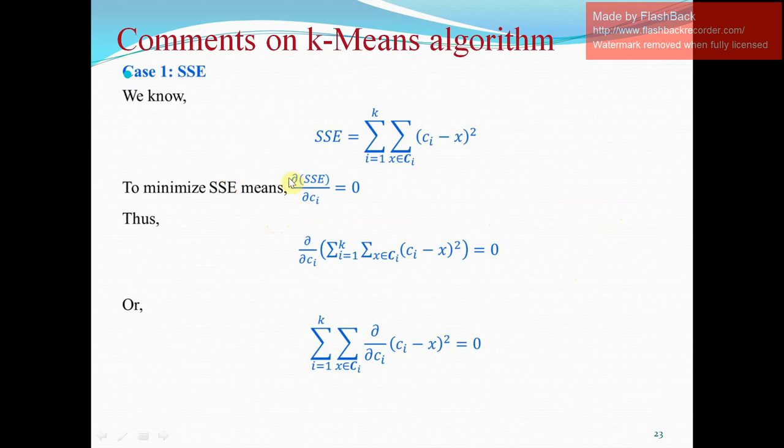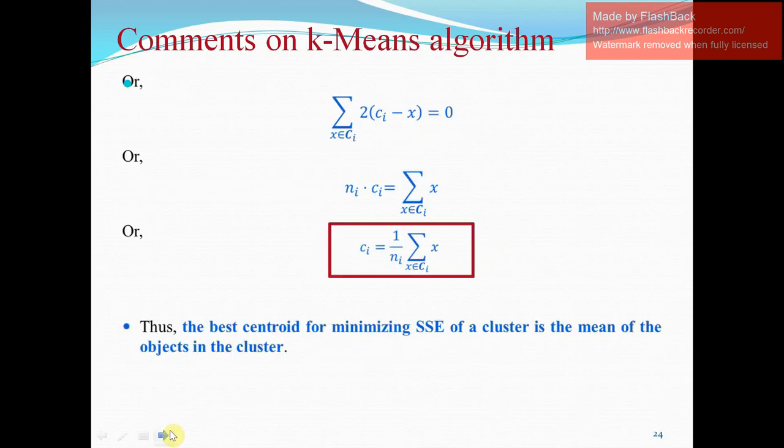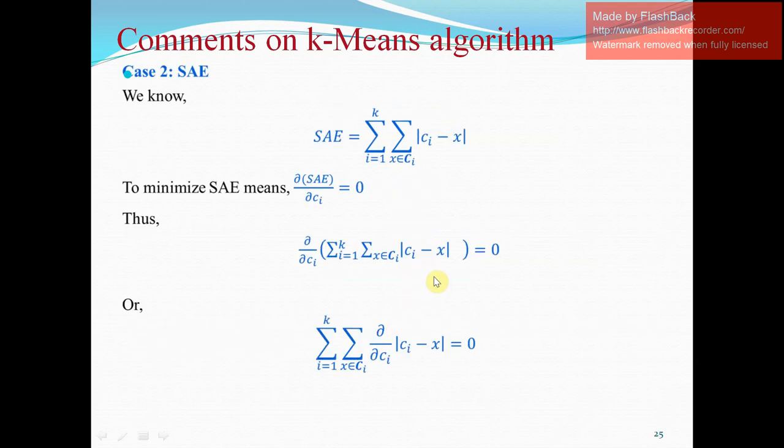Case 1, to calculate SSE, we know the formula of SSE as we discussed in the previous slide. To minimize SSE, we assume that the derivative of SSE is equal to 0. When we apply it for 0, the minimum distance error, standard error is 0, is calculated as 0. Here, to calculate and it derives to the formula ci equals 1 divided by NI, then summation x belongs to ci, x.